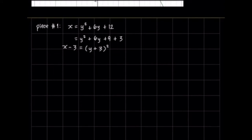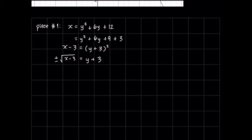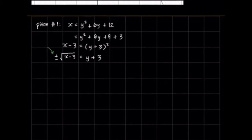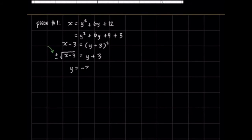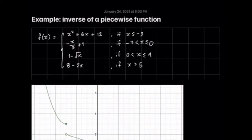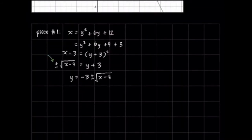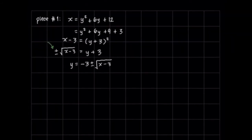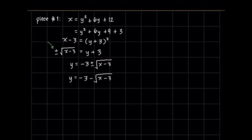We want to take the square root of both sides. We have √(x − 3) = y + 3. But we must not forget that there is a plus-or-minus on our square root, since it's not automatically the principal square root when we take the square root of both sides. So take note of the plus-or-minus. Isolating y, we have y = −3 ± √(x − 3). But knowing that the first piece is the left part of a parabola, we can write the inverse as y = −3 − √(x − 3).